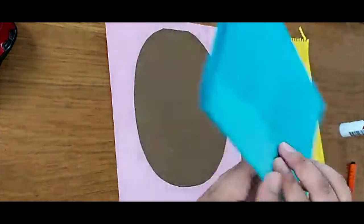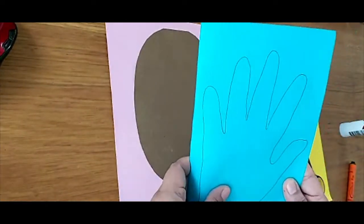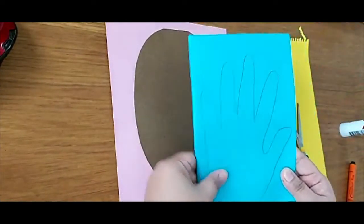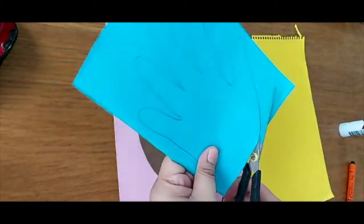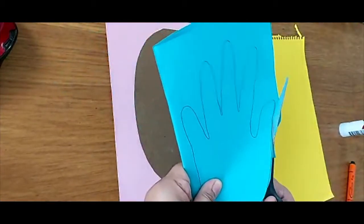We have to fold the paper so when you cut it, it still comes in two pieces. Just cut your traced hand.